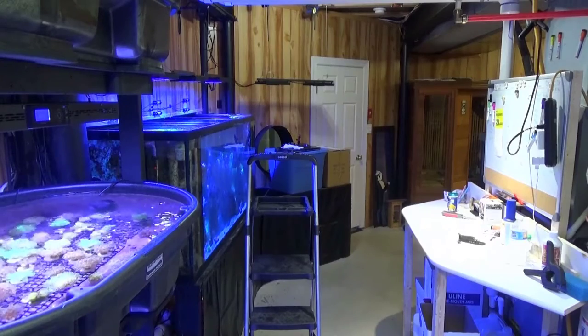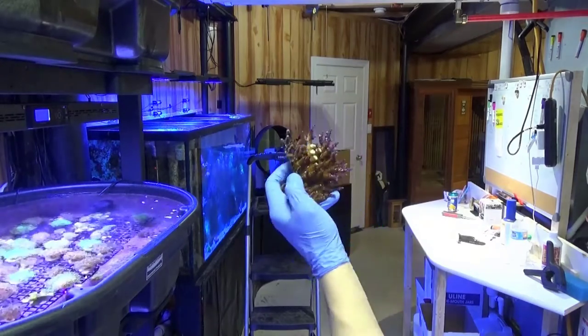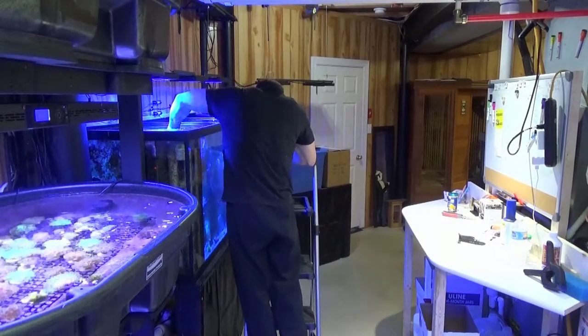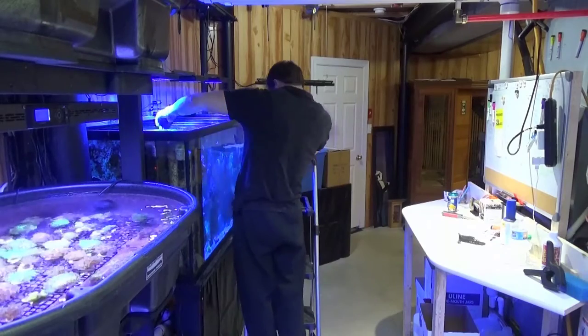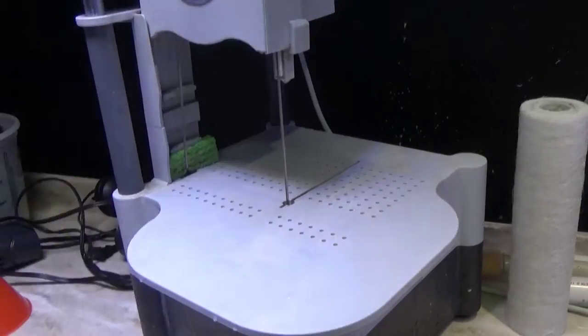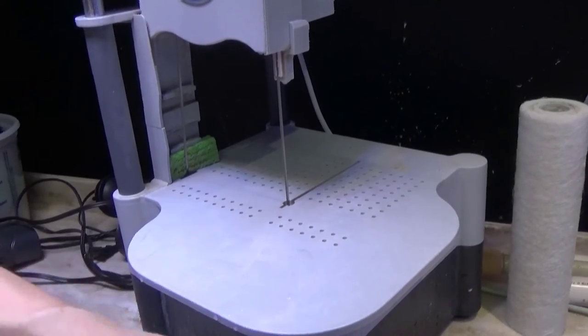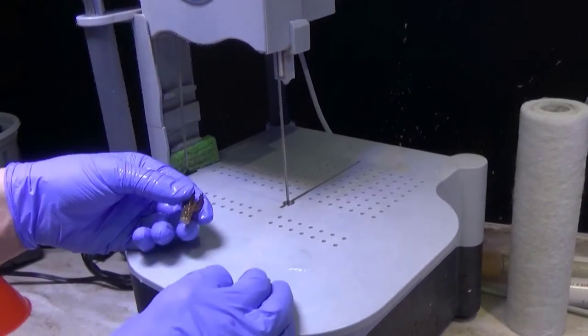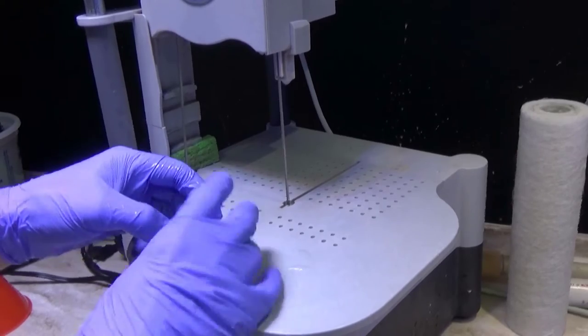Since I had to use the coral cutters, these frags are a little uneven, so I'm taking the bandsaw to straighten them out. You want your coral to sit straight up and down so that the light hits them evenly and when they grow they look natural.